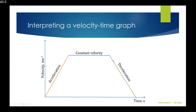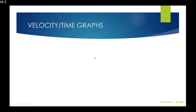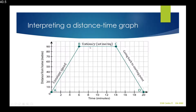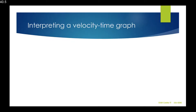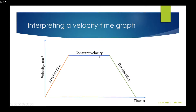Where we have a line sloping downwards or a line with a negative gradient, the object is decelerating or slowing down. An important point to note: in a distance-time graph and a velocity-time graph, slopes represent different things. In a distance-time graph, a flat slope means the object is stationary, whereas in a velocity-time graph, a flat line means it's going at a constant velocity.